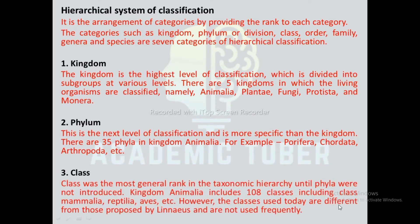Class: Class was the most general rank in the taxonomic hierarchy until phyla were introduced. Kingdom Animalia includes 108 classes, including class Mammalia, Reptilia, Aves, etc. However, the classes used today are not from those originally proposed by Linnaeus and are not used frequently.